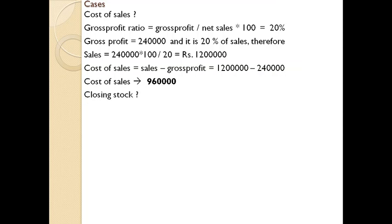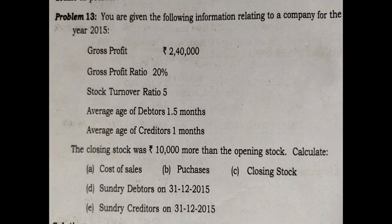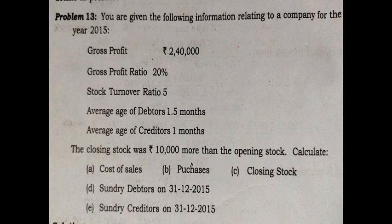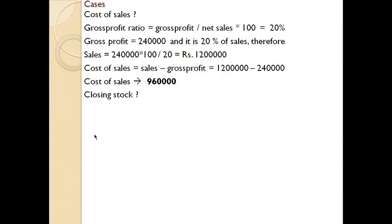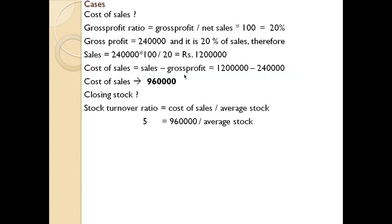Next, find closing stock. The equation related to stock is average stock, and we know that average stock equals opening stock plus closing stock divided by 2. There is no direct information regarding opening or closing stock individually, so we need to first find average stock. Stock turnover ratio equals cost of sales divided by average stock. Stock turnover ratio is 5, cost of sales is 9,60,000, so average stock equals 1,92,000.